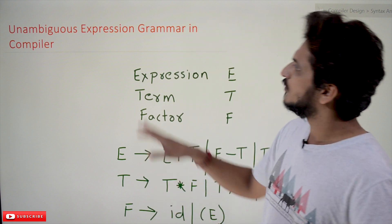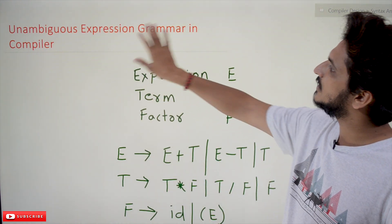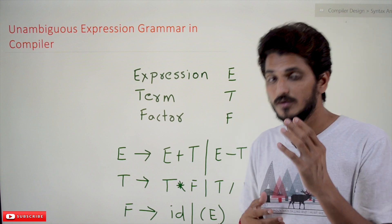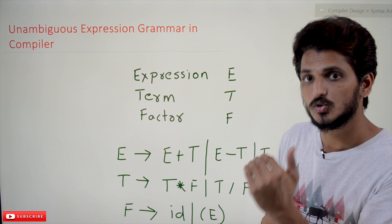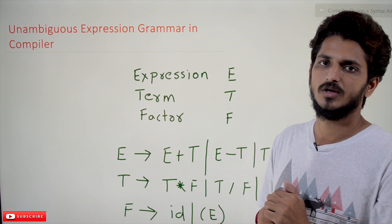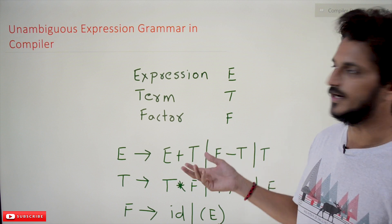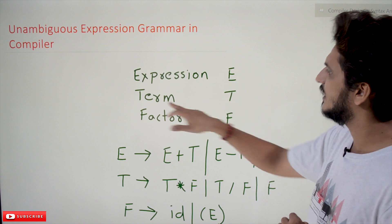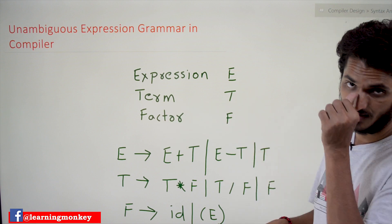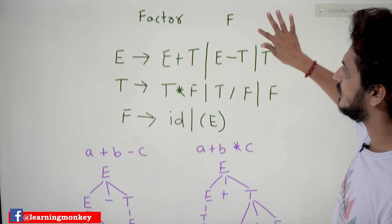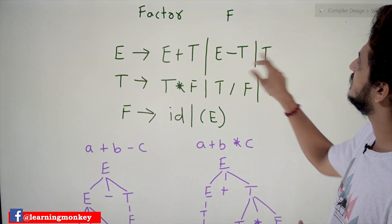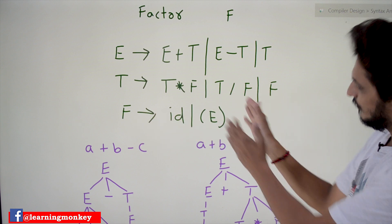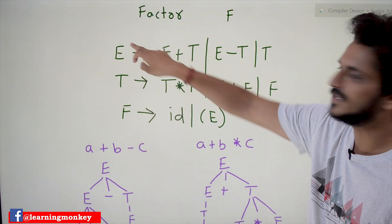Coming to today's class, we have to write an unambiguous expression grammar in compiler in order to evaluate the expressions, and we need to maintain the precedence and associativity — left associative. Here we are using three different non-terminals: expression (shortcut e), term (t), and factor (f). The grammar is written like this: E → E + T | E - T | T; T → T * F | T / F | F; F → id | (E).